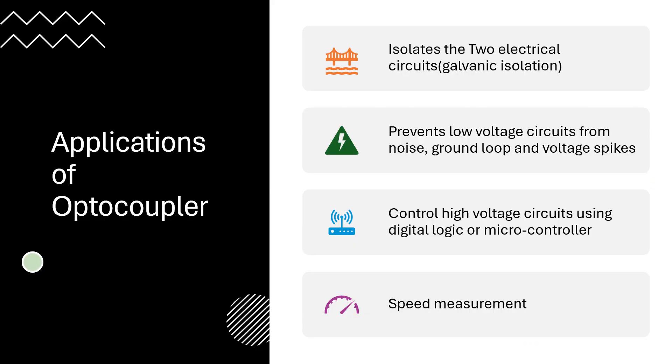Here are some applications of optocouplers. One is electrical isolation of two circuits which I have already discussed. Another one is preventing low voltage circuits from the noise and high voltage circuits using digital logic microcontroller. And the last one is the speed measurement which I will discuss in the later slides.